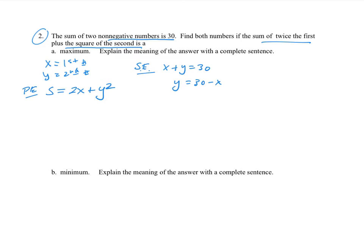So now I can put that into here. Taking this and plugging it into our primary equation, we're going to multiply this out and take the derivative. My sum would be S = x² - 58x + 900. My domain is going to be between 0 and 30. It can't be over 30 because we have the sum to 30.